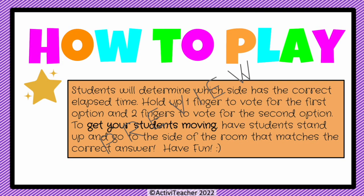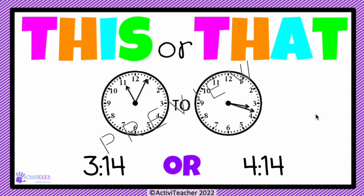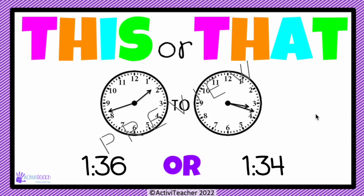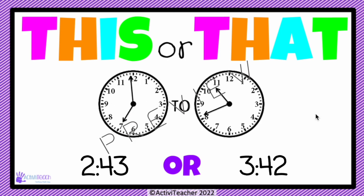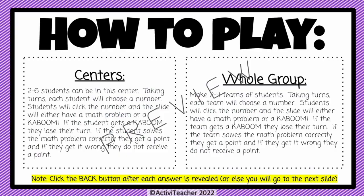The next activity is an elapsed time 'This or That' game to get your students up and moving. Students will stand up and go to the side of the room that matches the correct answer. They'll figure out the elapsed time and then go to the correct side of the room. I'll flip through so you can see some of the other clock options.